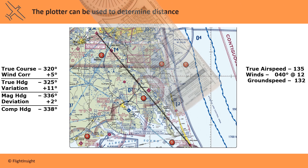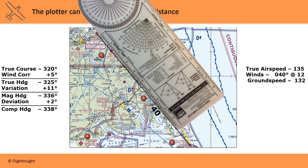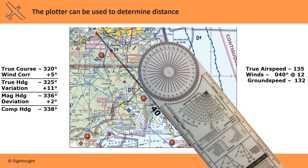We can use the plotter again to figure out the distance and later the time en route. Make sure you use the correct scale on the plotter. The sectional chart uses the scale of 1 to 500,000. You can also verify the correct scale by matching up the mile marks on the plotter with the hash marks of the lines of longitude — each one of those hash marks is 1 mile. This flight is 59 nautical miles.